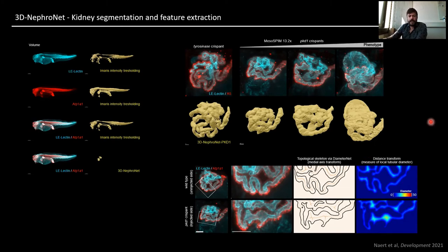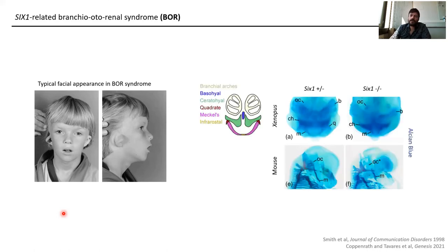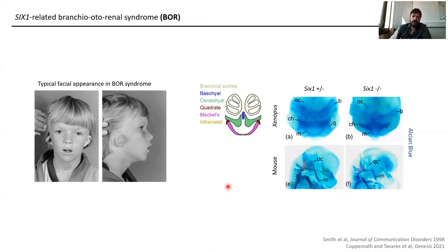I would like to shift gears to another organ system and disease: EYA1-related branchio-oto-renal (BOR) syndrome. Patients present with otic malformancies — usually congenital deafness — and abnormalities in craniofacial structure. Coppenrath and Tavares modeled this in Xenopus, and comparing an EYA1 heterozygote to an EYA1 null, one can see a difference in craniofacial structure using alcian blue staining — a very classical chemical stain still mostly used in the field. These abnormalities are very similar to those seen in the existing mouse model.